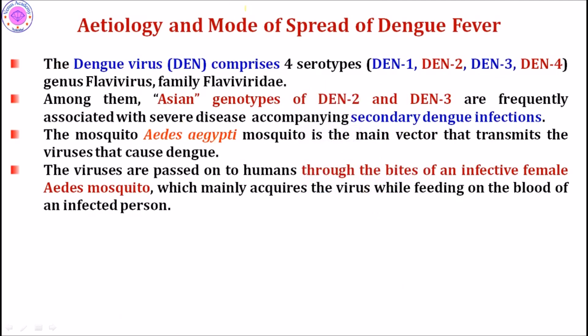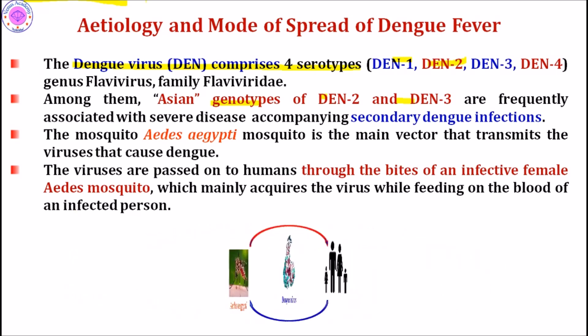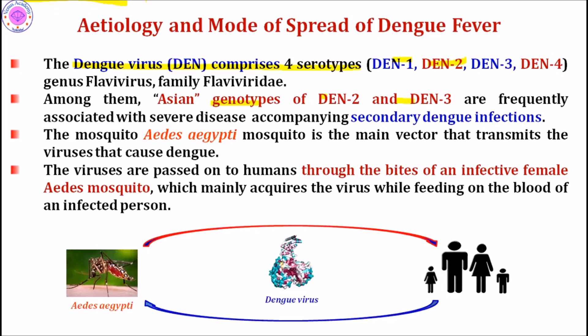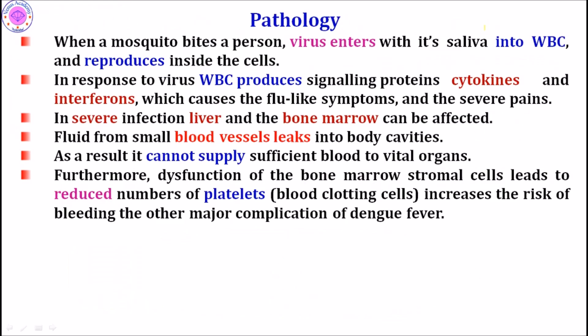The cause of dengue fever is the dengue virus, which has four types: dengue 1, 2, 3, and 4. The genus is Flavivirus and the family is Flaviviridae. Asian genotypes of dengue virus 2 and 3 are frequently associated with severe disease. The virus is transmitted by the bite of an infective female Aedes aegypti mosquito, which acquires the virus while feeding on an infected person. This mosquito mainly bites during daytime.